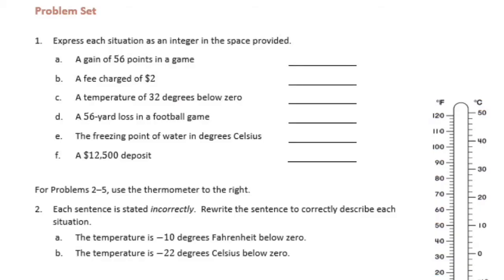Part a says a gain of 56 points in a game. The key word here is 'gain' — if you're gaining something you're getting it, so it's going to be positive 56. You can write plus if you want, but you would just write the number 56.